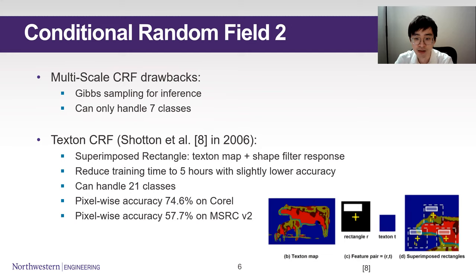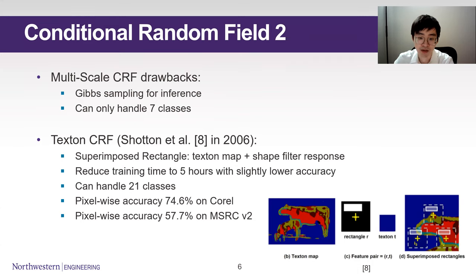That's why TextonCRF was proposed in 2006. It uses Texton map and shape filter response to capture dependencies between pixels, like two Textons usually showing up in the same region. The model emphasizes training accuracy, which reduced training time to 5 hours compared to over 10 hours from multi-scale CRF, but still keeps the same accuracy.